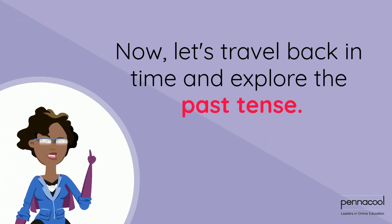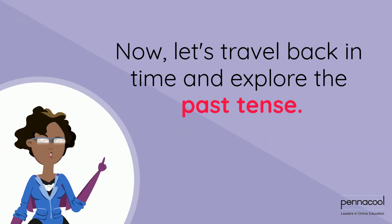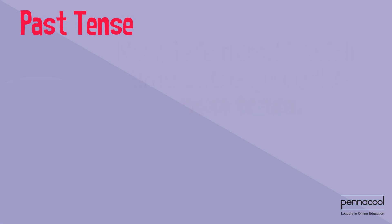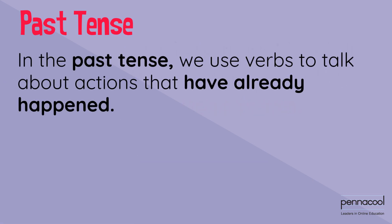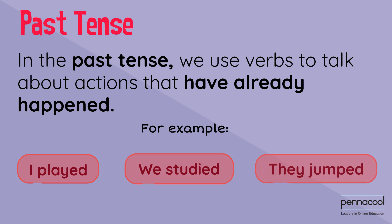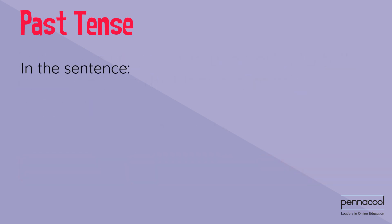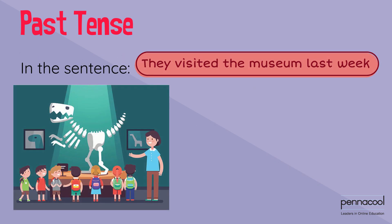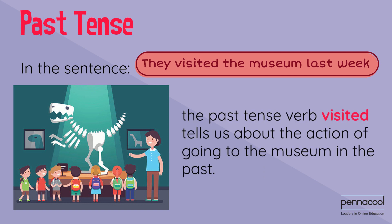Now let's travel back in time and explore the past tense. In the past tense, we use verbs to talk about actions that have already happened. For example: I played, we studied, they jumped. In the sentence 'they visited the museum last week,' the past tense verb 'visited' tells us about the action of going to the museum in the past.